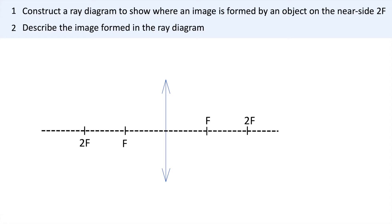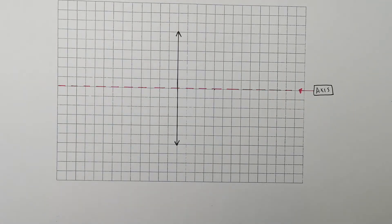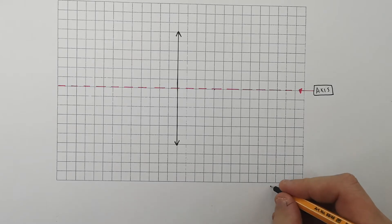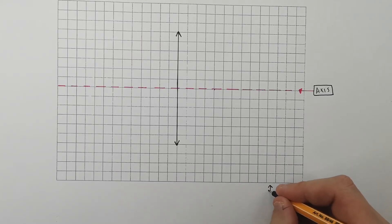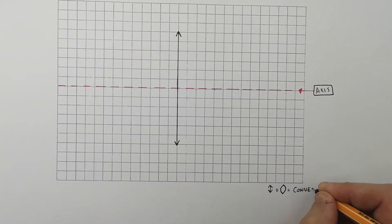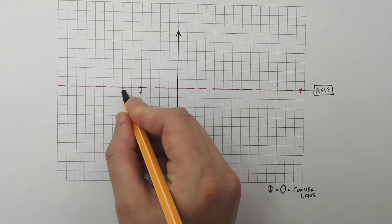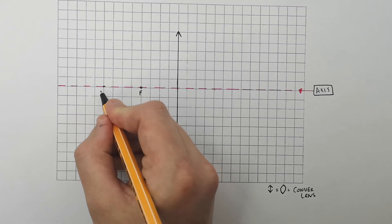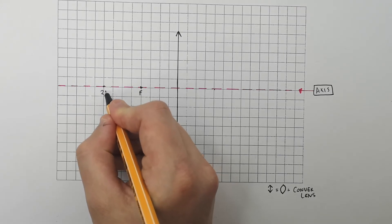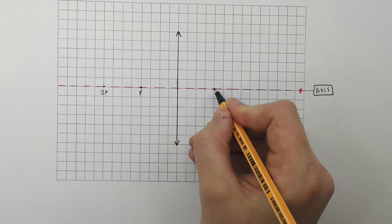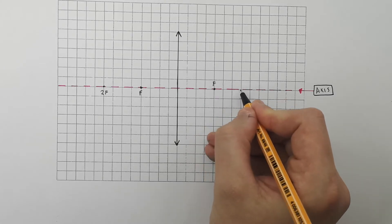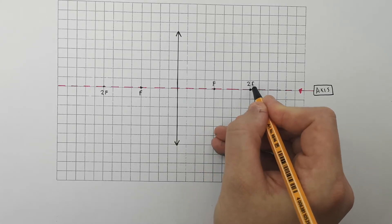This is the problem you will learn how to solve. Press pause to attempt it. The method and the answer will follow. This is the axis and this is the convex lens of a ray diagram — the arrows are pointing away from the axis, so this is a convex lens. Drawing the near side principal focus f, and this point represents 2f, twice the distance of the principal focus away from the lens. This is the far side principal focus f, and this is the far side 2f.